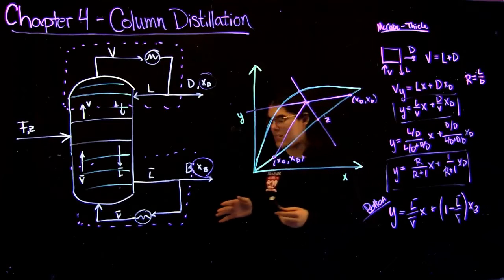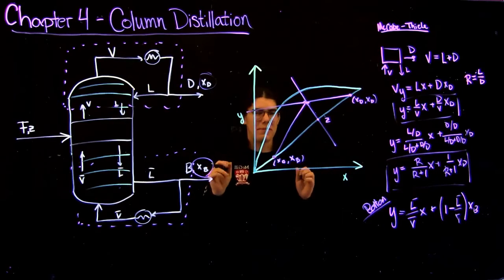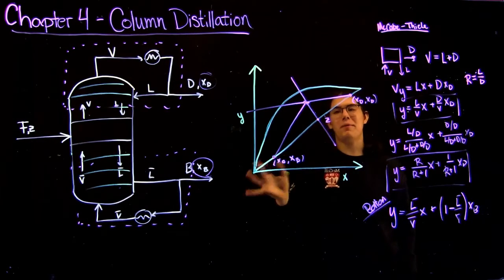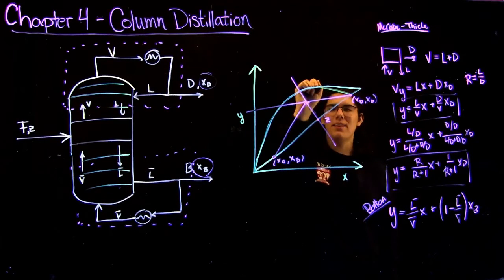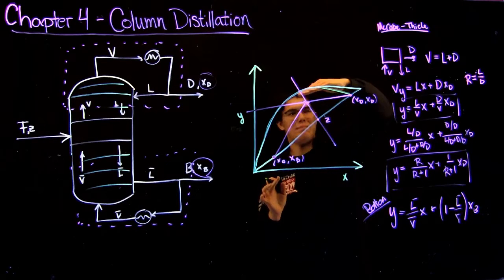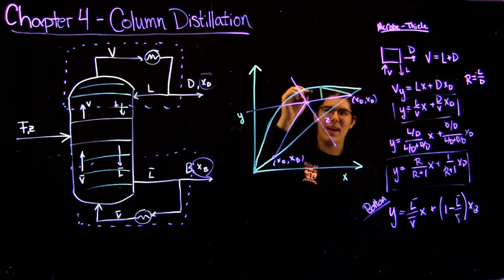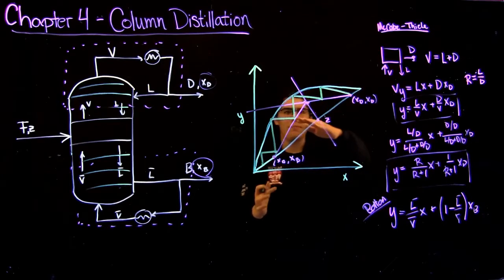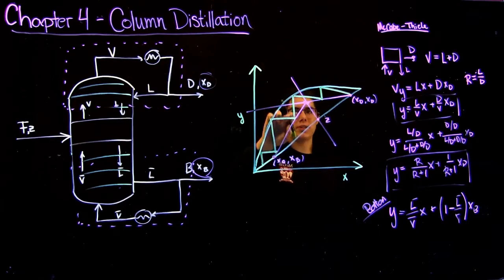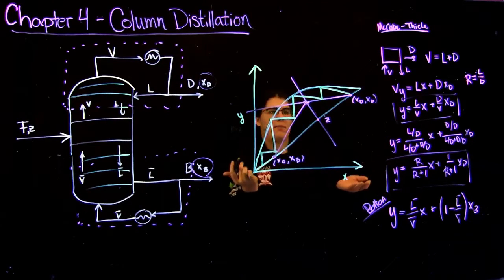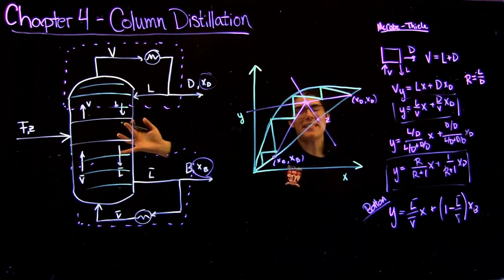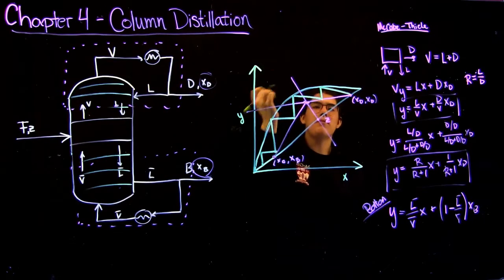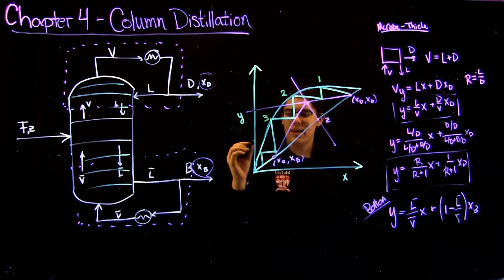Now how you find the number of stages in the column — this is what the McCabe-Thiele method is all about — is by counting off stages. You start at your first point at the top, draw a straight horizontal line out until it hits the equilibrium line, then go straight down to your operating line. You do that over and over: out to the equilibrium line, down to the operating line. Once you can't proceed on your top operating line anymore, you switch to your bottom operating line and continue. Each time you hit your equilibrium line it counts as one stage, because a stage is just like a flash separation — a point of equilibrium. You simply number your stages: stage one, stage two, stage three, stage four. For whatever this design was, you'd need four stages to achieve the specified separation.